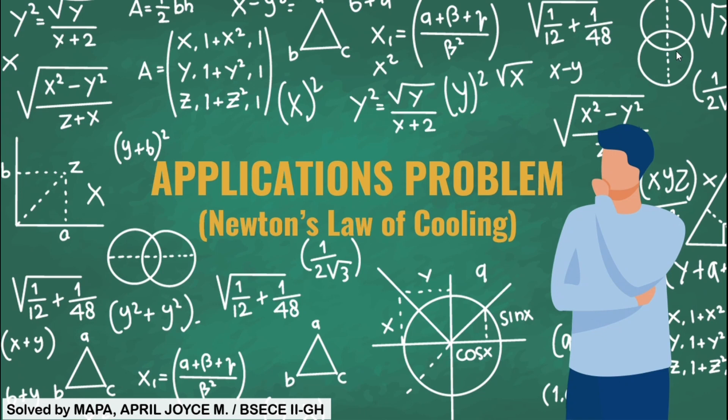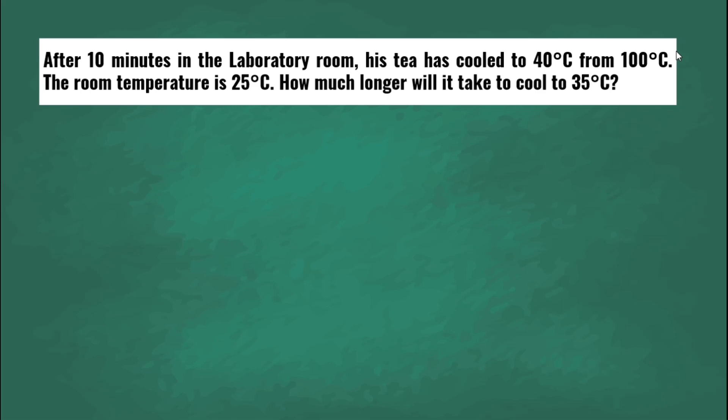Good day everyone! I'm here to discuss one of the problems in Newton's law of cooling applications. Here is the problem: after 10 minutes in the laboratory room, his tea has cooled to 40 degrees Celsius from 100 degrees Celsius. The room temperature is 25 degrees Celsius. How much longer will it take to cool to 35 degrees Celsius?